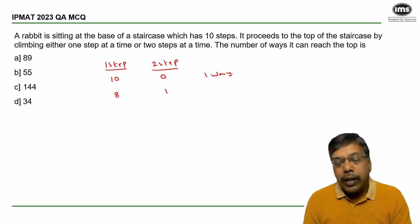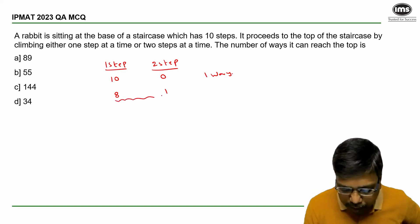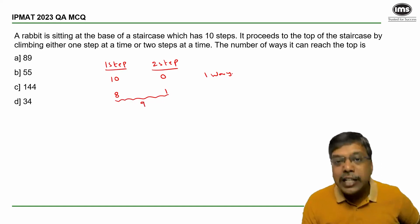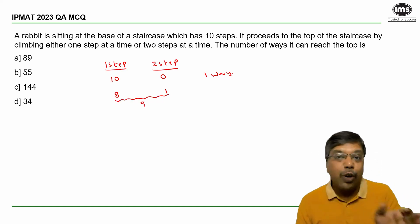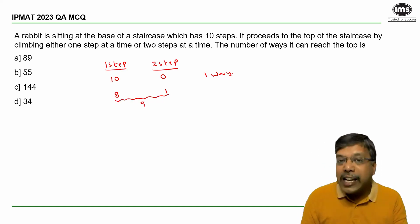So in total the rabbit makes nine jumps, out of which one is a double step and eight are single steps.